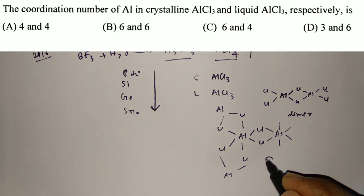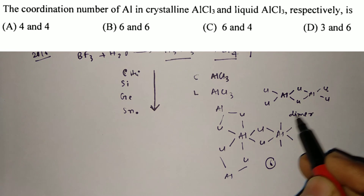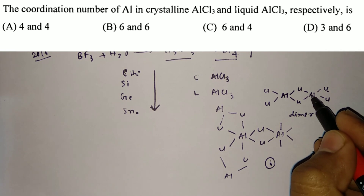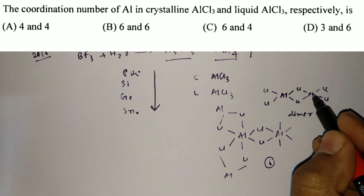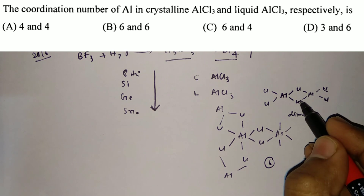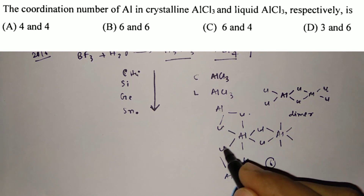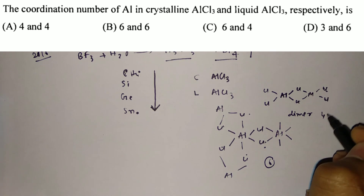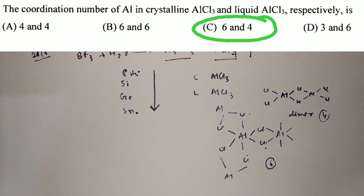For crystalline AlCl3, the coordination number is six. For liquid AlCl3, it forms a dimer and the coordination number is four. So the final answer is C — crystalline: six, liquid: four.